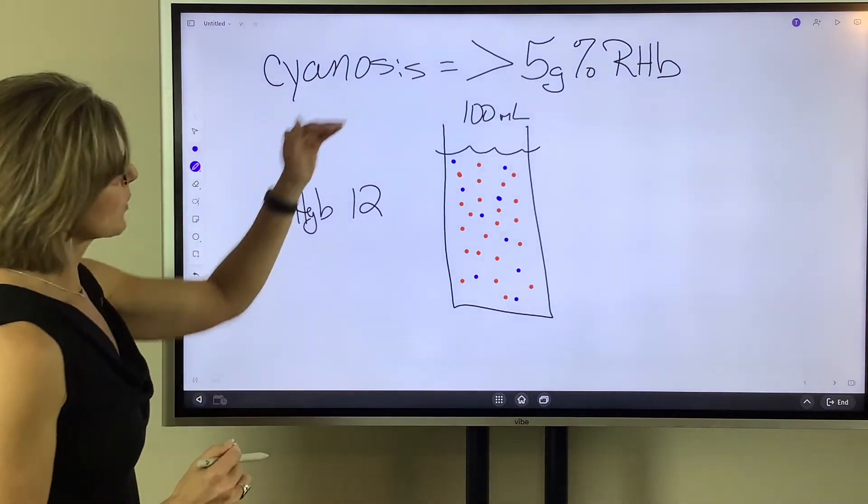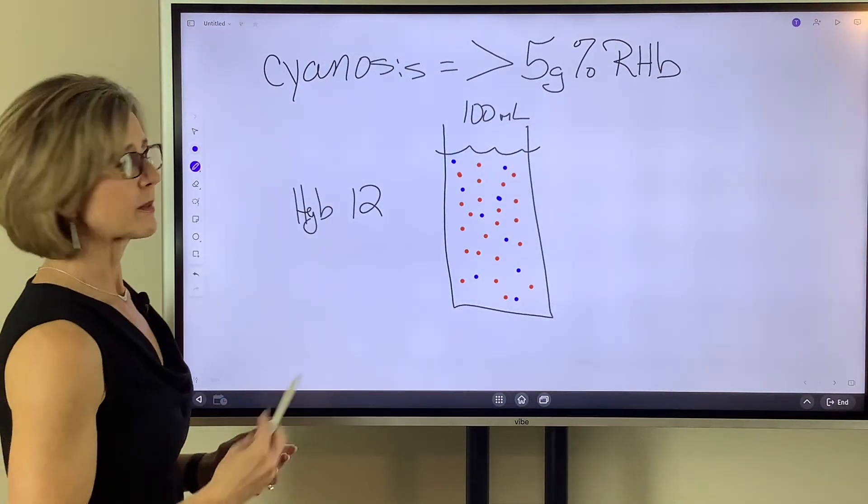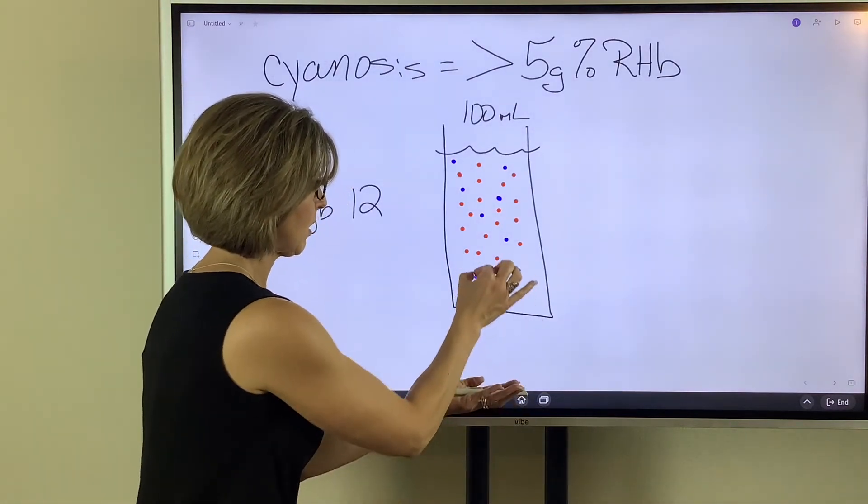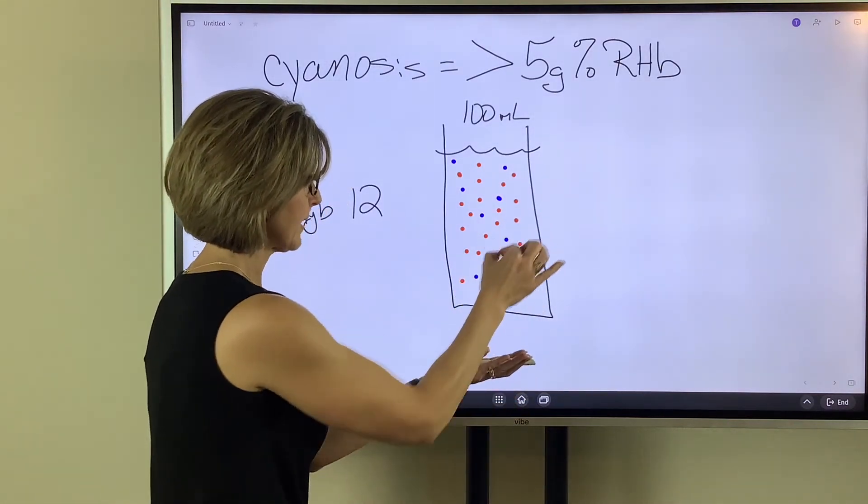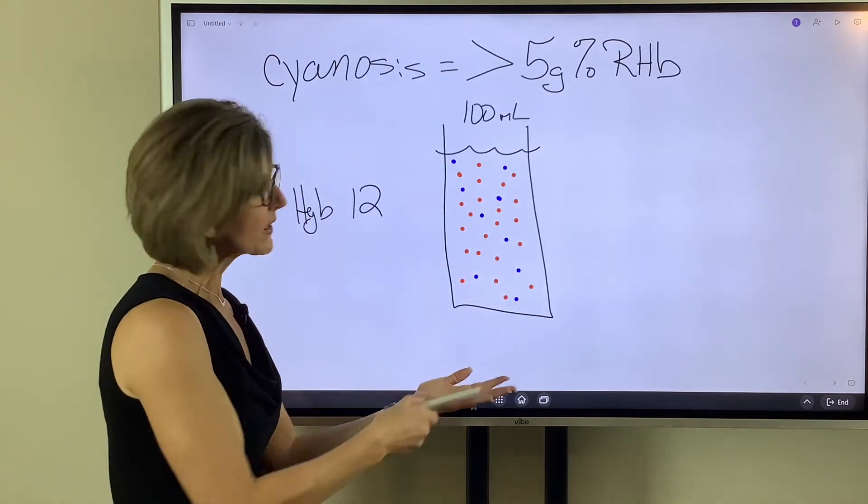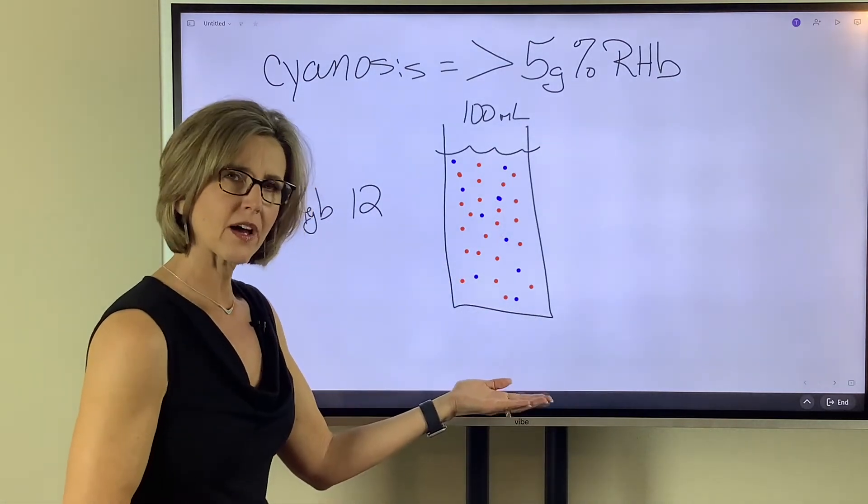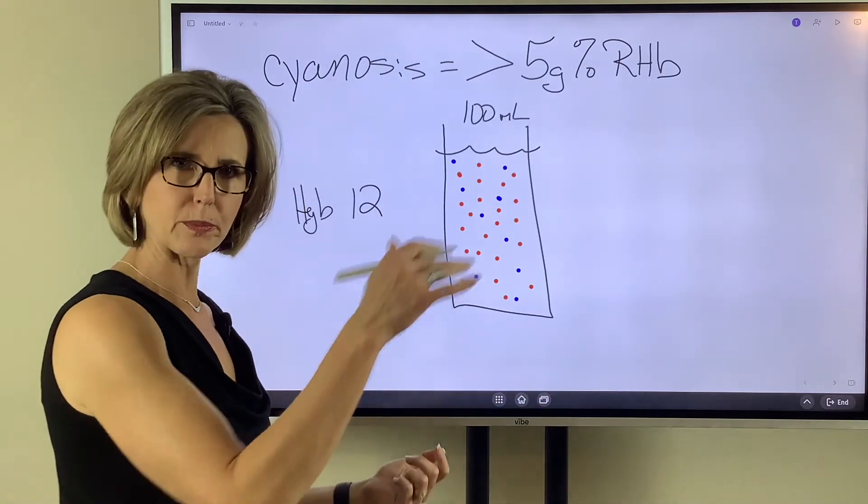So what greater than five grams percent of reduced hemoglobin means is, if I come to this 100 ml of blood and I pull off all of those blue dots, all of the reduced hemoglobin, if I weigh it and it weighs greater than five grams, the patient will be blue.